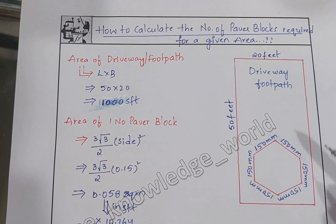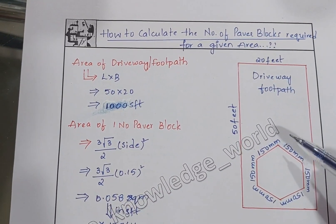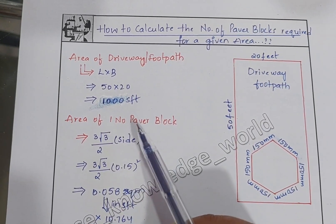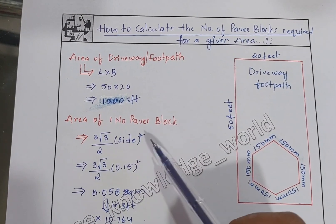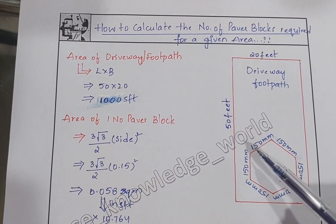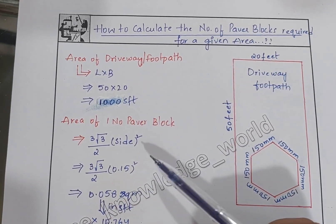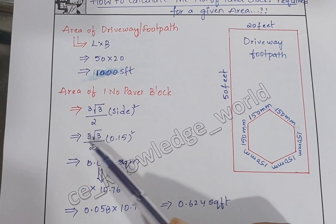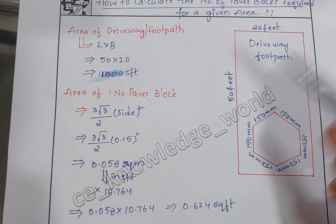The paper block is in a hexagonal shape. Each side of the paper block is 150 mm, which is 0.15 meters. The formula to find the area of one hexagonal paper block is: 3√3 divided by 2, into side squared. So that is 3√3/2 × (0.15)². After calculating this, we get 0.058 square meters.